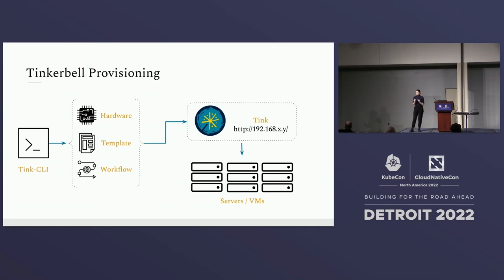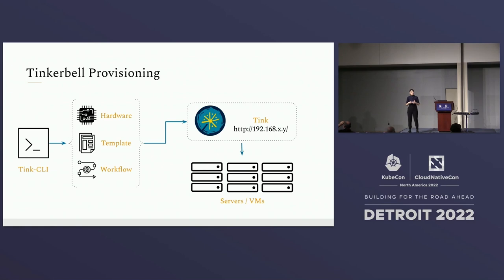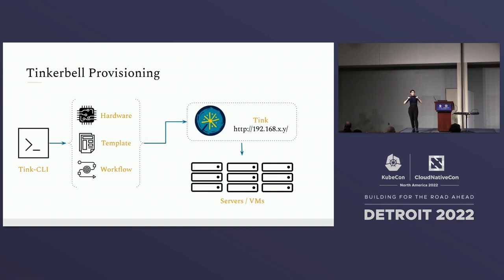To provision bare metal using Tinkerbell, there are three sets of configuration: hardware, template, and workflow. The hardware specifies your inventory — you make the Tink server aware of what hardware you have available. For example, if you have 10 Raspberry Pi machines, you enumerate all of those, uniquely identified using the MAC and IP address. A template is a set of actions you want to perform on top of your machine — think about installing an operating system, dependencies, middleware, or any application, so by the end you have a server in the state you wanted.